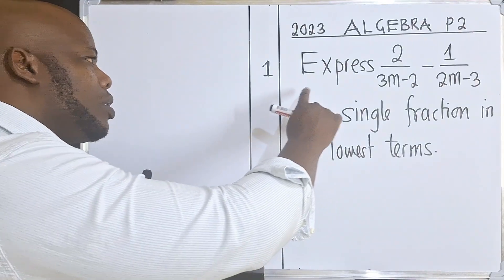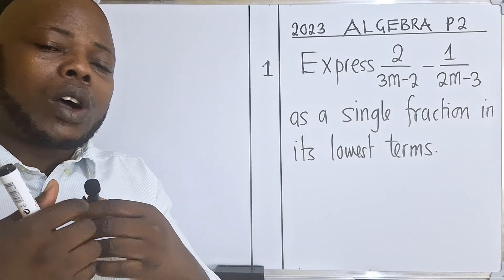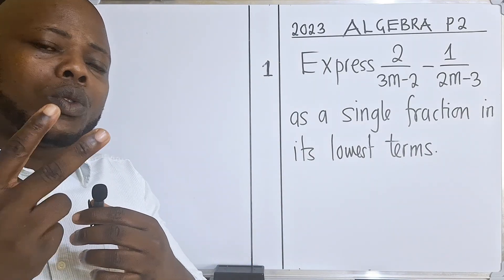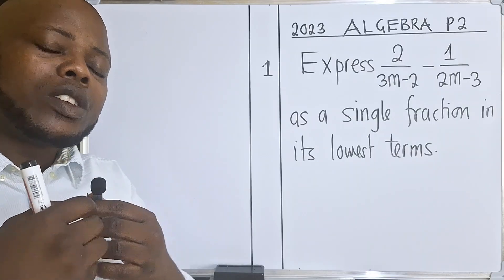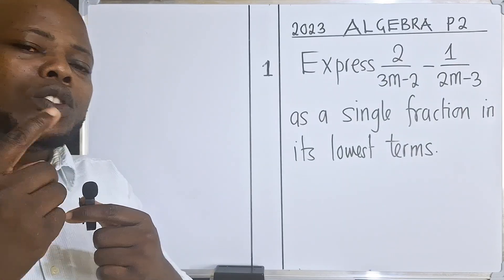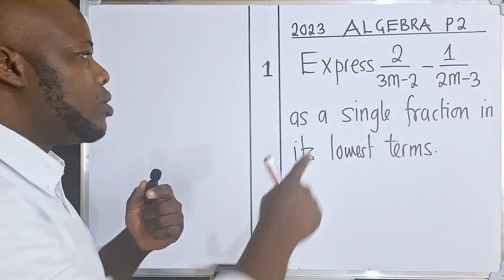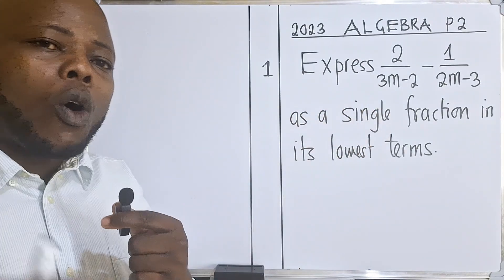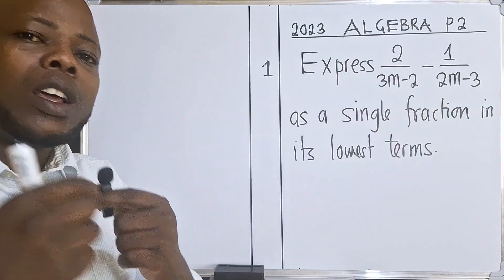All right. So I've got this question. This is algebra. So algebra in paper two, you expect two questions in algebra. So in 2023, they asked two questions and they were on question one. So this is question 1a. Always expect a question of this nature.